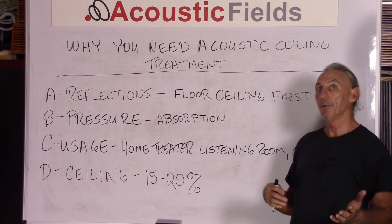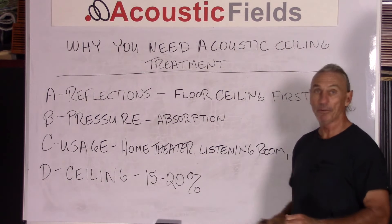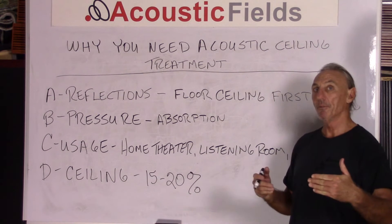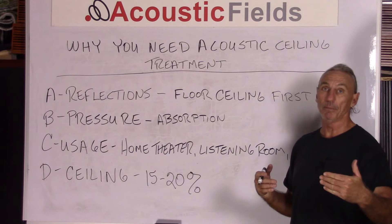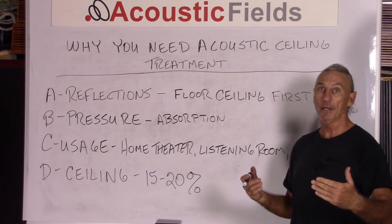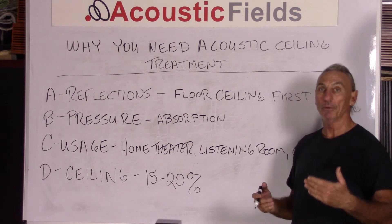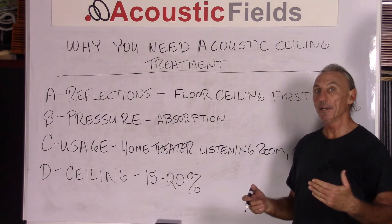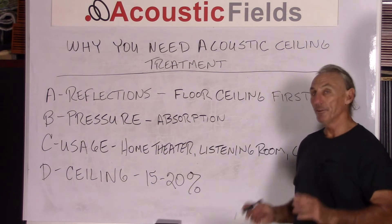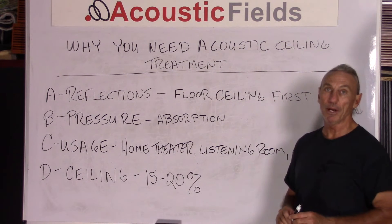All of these variables depend on room usage. What is our usage? If it's a home theater room, we can go a couple of different ways. Diffusion and absorption is a popular way. It depends on room size, how much energy is in the room, how big the seating area is — lots of variables to consider. But as a general rule in home theater, we use both absorption and diffusion.